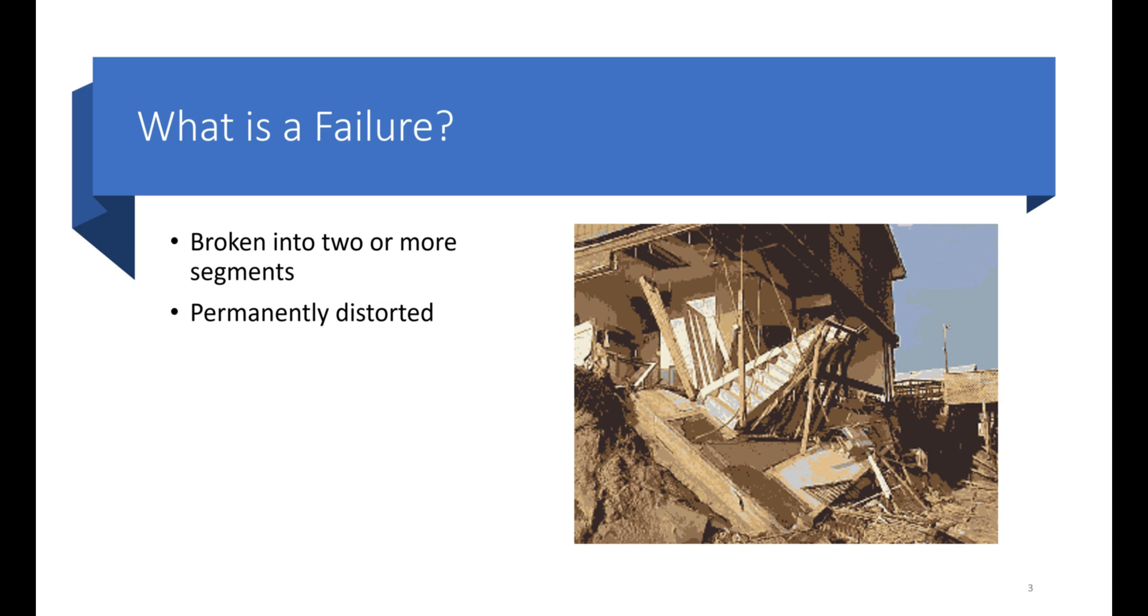So for example, if I have this structure and some forces are applied on it and this permanently takes the shape of this form or this form, it is permanently distorted, so we will again call this a mechanical failure.